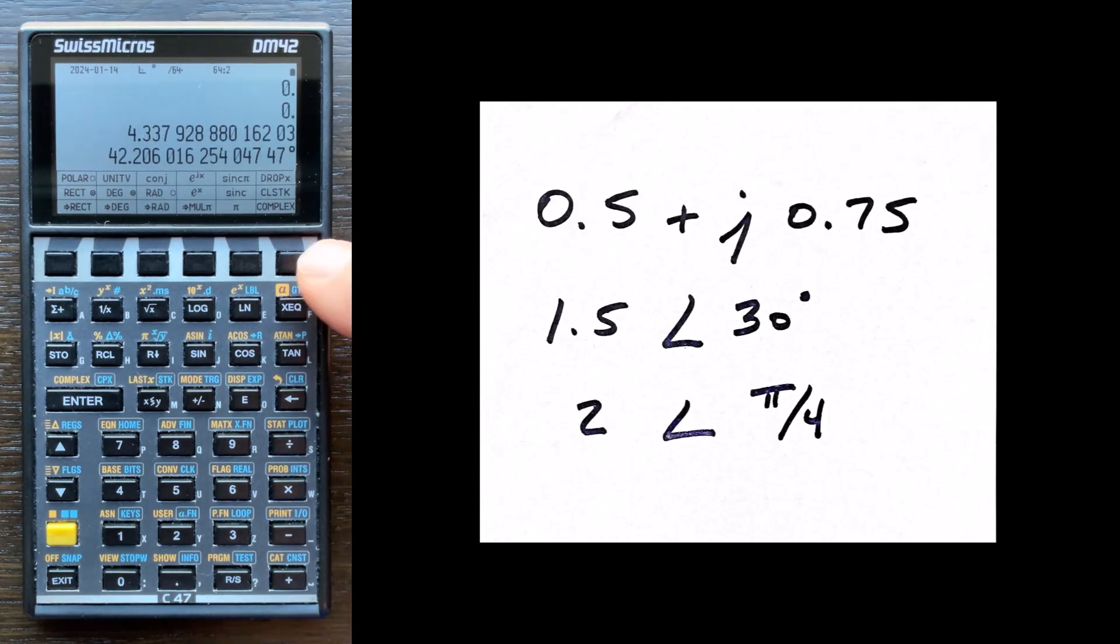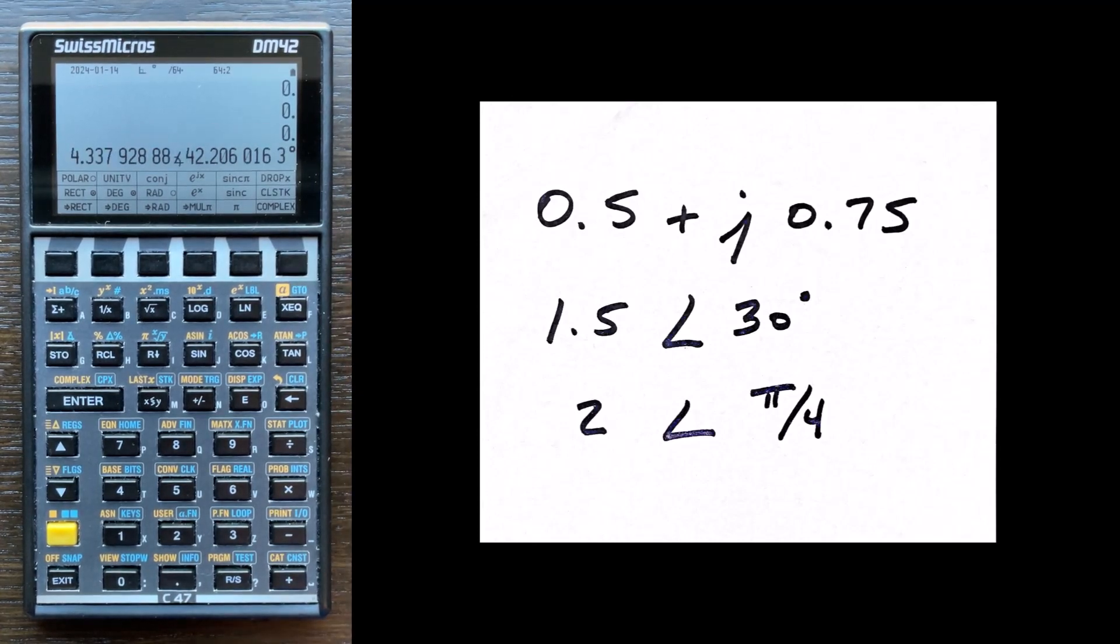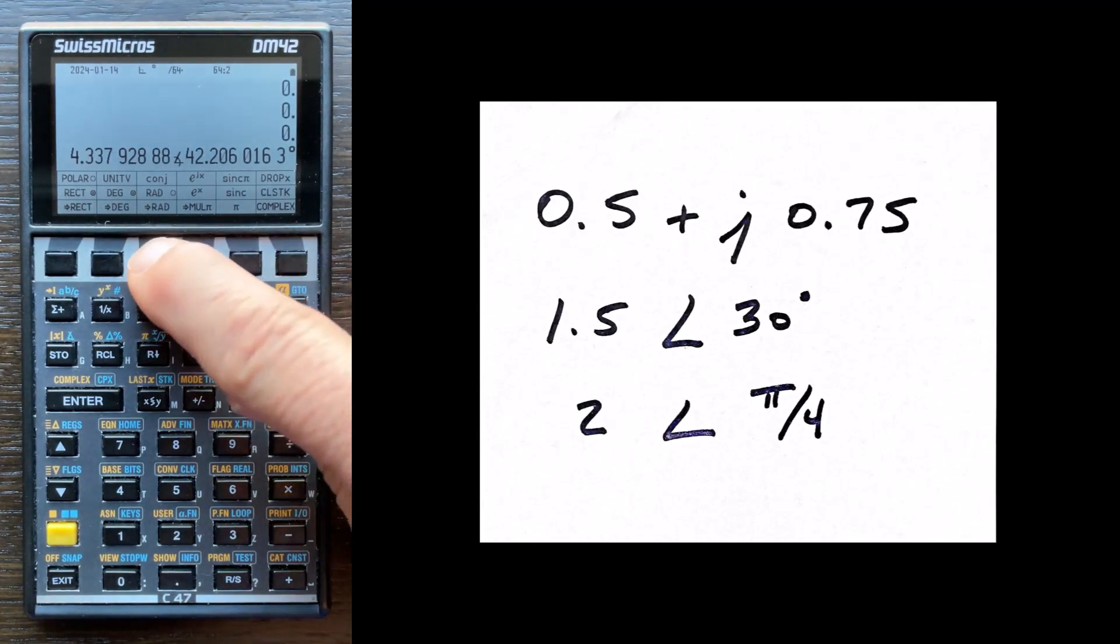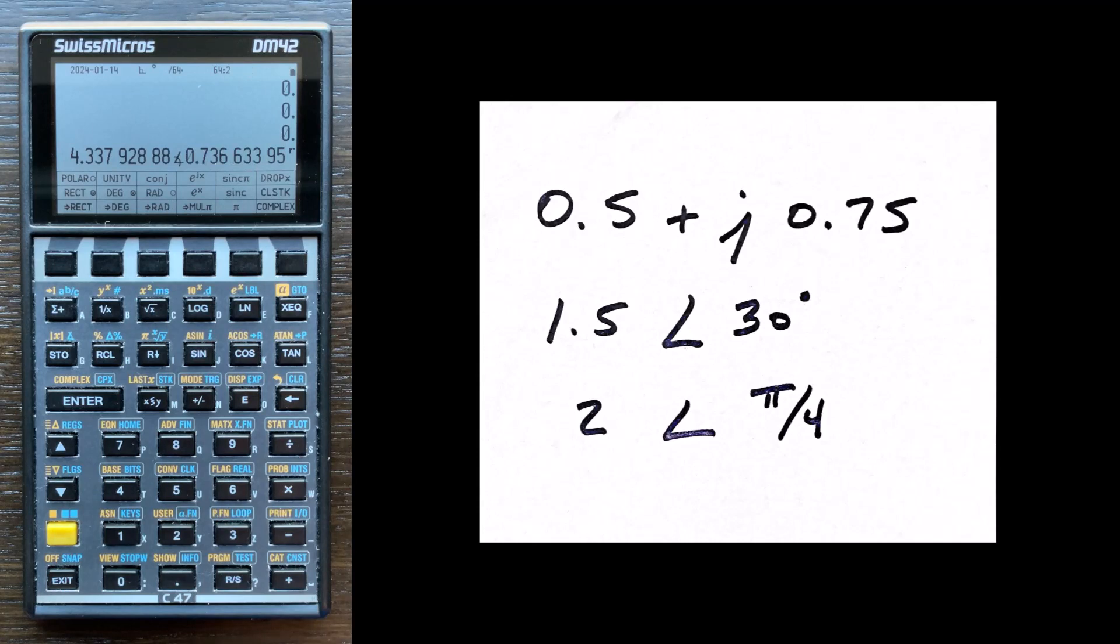I can press complex to put this back on the stack as a complex number, change it to radians, and break it apart again. This is what I really like about the C47 calculator for manipulating complex numbers. Once I've set it up the way I like, it has a lot of really nice features.